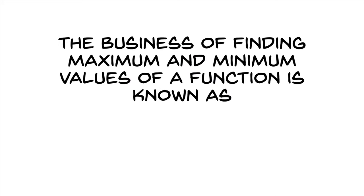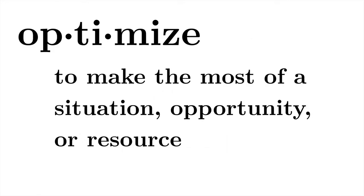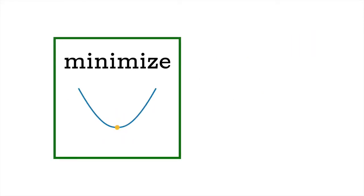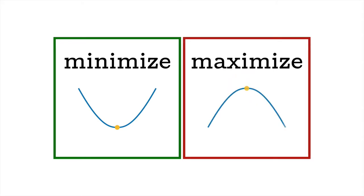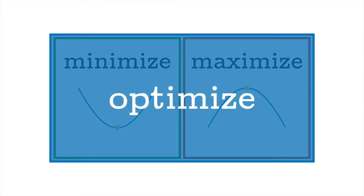Generally, the business of finding maximum and minimum values of a function is known as optimization. The everyday definition of optimize is to make the most of a situation, opportunity, or resource. But when we're looking at functions and trying to optimize values, we might add that we're also looking for the possibility of making the least of a situation. To minimize means to find the argument that gives you the minimum value of the function. To maximize means to find the argument that gives you the maximum value. If we're looking to either minimize or maximize but don't care which, we say we're trying to optimize the value of the function.